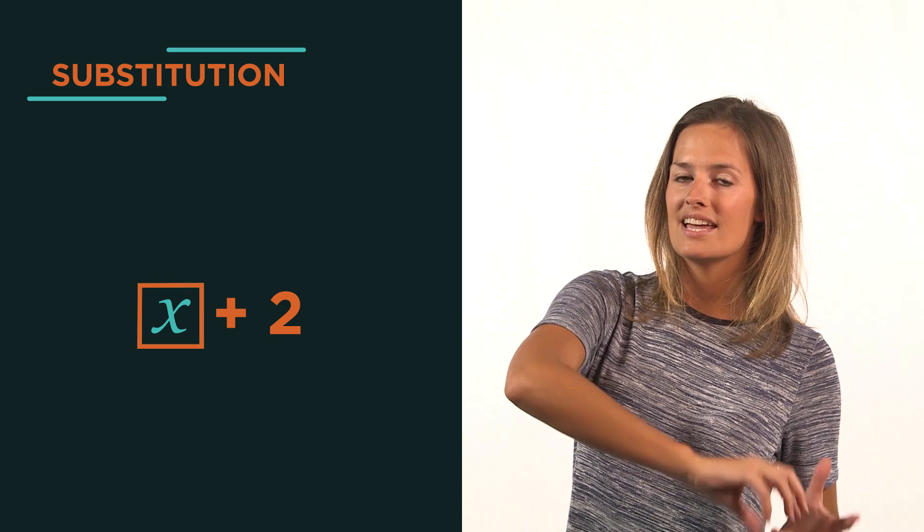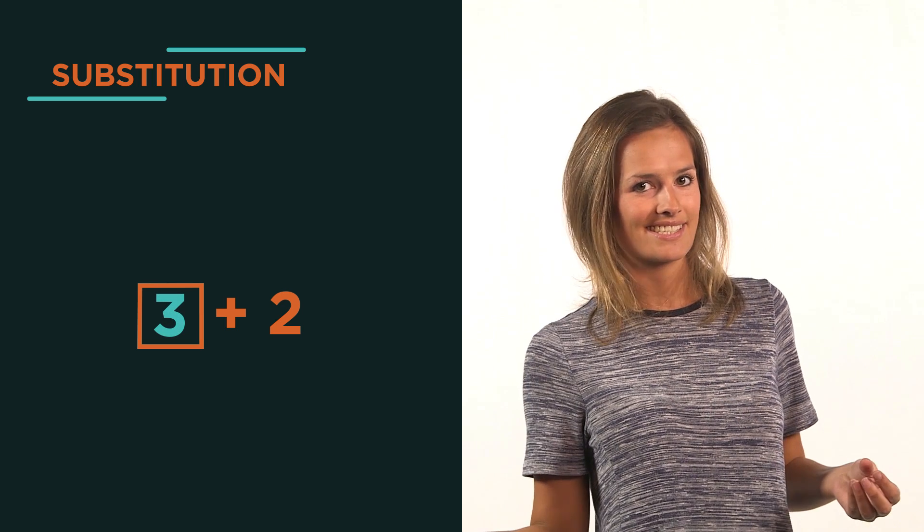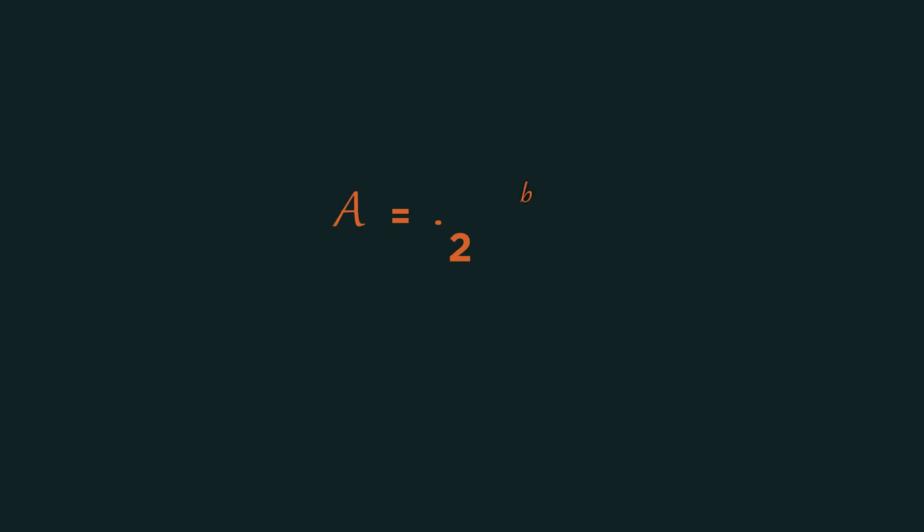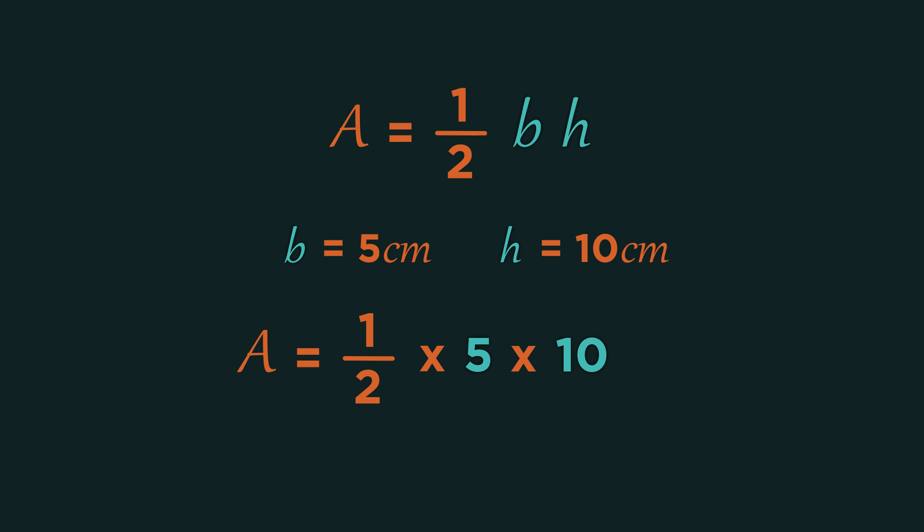So we have this formula. If the base is 5 centimeters and the height is 10 centimeters, then the area is half times 5 times 10, because we have replaced the B with 5 and the H with 10. So the area is 25 centimeters squared. That's all there is to substitution.